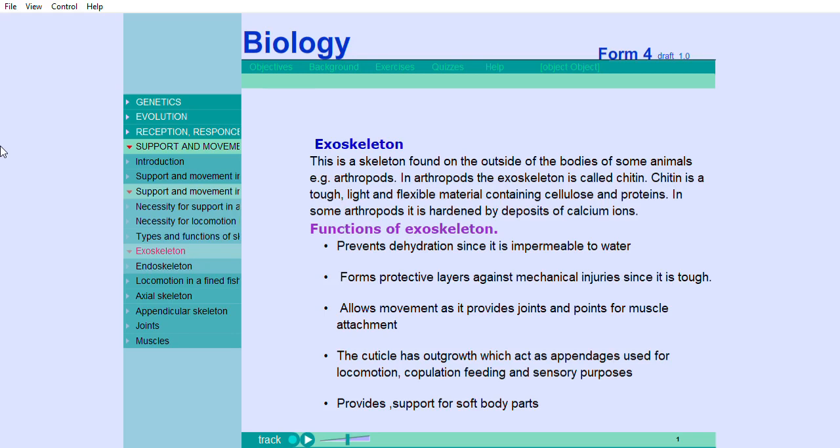Functions of exoskeleton: Prevents dehydration since it is impermeable to water. Forms protective layers against mechanical injuries since it is tough. Allows movement as it provides joints and points for muscle attachment. The cuticle has outgrowth which act as appendages used for locomotion, copulation, feeding, and sensory purposes. Provides support for soft body parts.